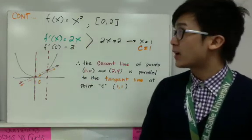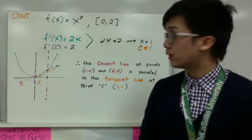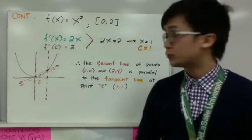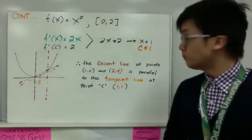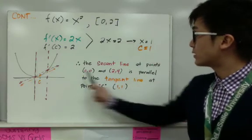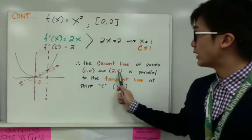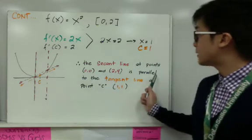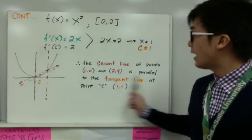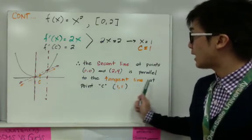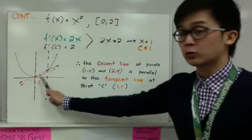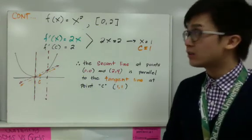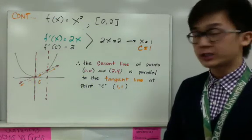Therefore, we satisfy the mean value theorem using the formula presented. Our conclusion: the secant line at points (0, 0) and (2, 4) — which are points a and b — is parallel or has the same slope as the tangent line at point c, which is equal to (1, 1). And that's how we use the mean value theorem for this particular function.